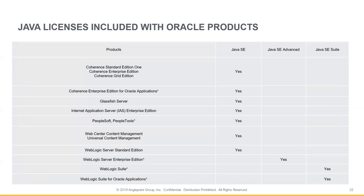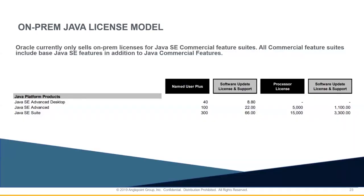Keep in mind that programs marked with an asterisk include the Java SE component, but within a restricted right — only for that specific application. For example, PeopleSoft includes Java SE, but it's restricted to the use of PeopleSoft or PeopleSoft applications only.